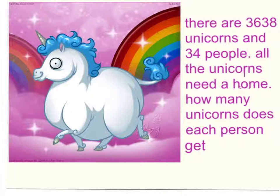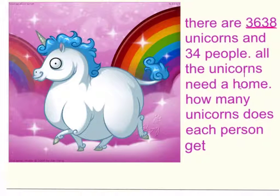There are 3,638 unicorns and 34 people. All the unicorns need a home. How many unicorns does each person get? So we know that this is our dividend, this is our divisor, and we have to find out our quotient.